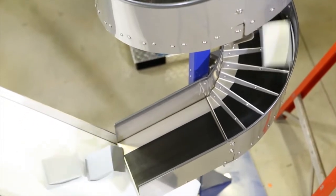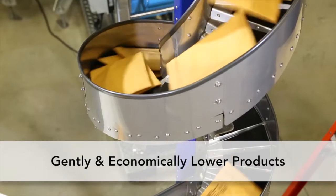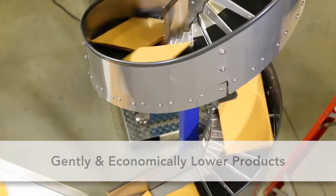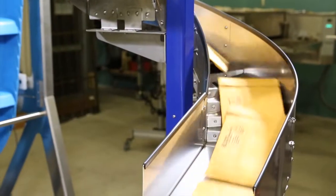Designed to gently and economically lower products from overhead conveyors, mezzanines or platforms, Dorner's spiral chutes feature a patent-pending stair-step design and are ideal for lightweight packages.